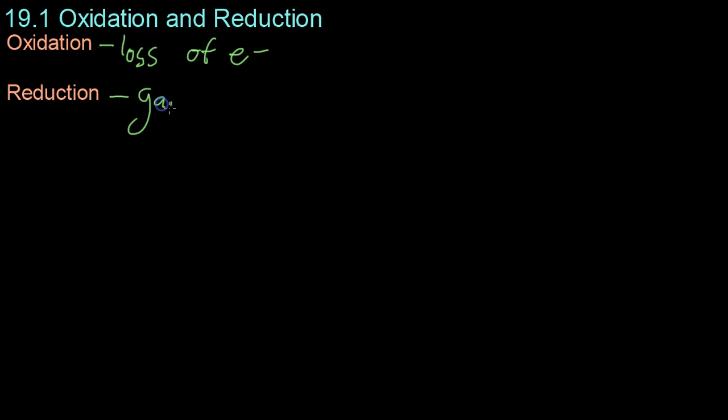Likewise, reduction is a gain of electrons. And reduction is easier to remember than oxidation because you can think of it as a reduce in charge. Because electrons are negative and you're gaining negative electrons, you're reducing the charge. Therefore, it's called reduction.